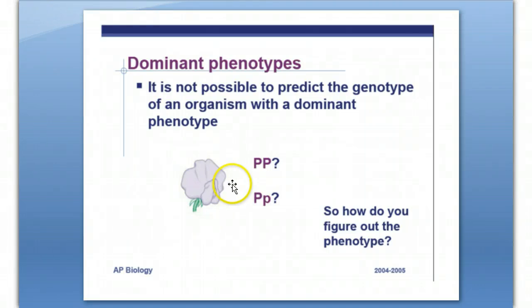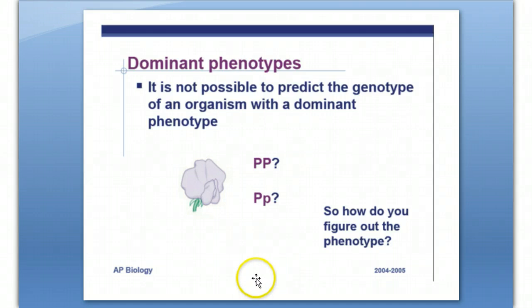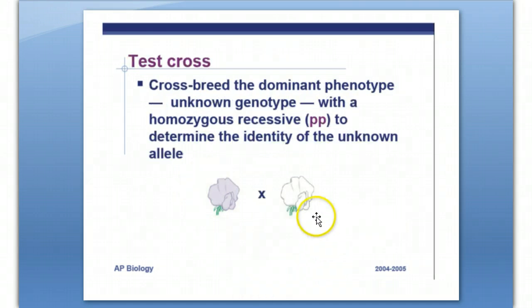For example, if you have a purple flower, it can either be big P, big P, or big P, little P. How are you going to know? You can't just look at it and figure out the alleles found on the homologous chromosomes. So how are you going to figure out the genotype from the phenotype?